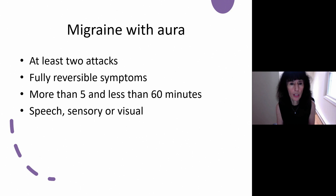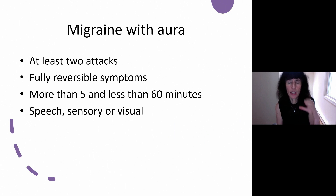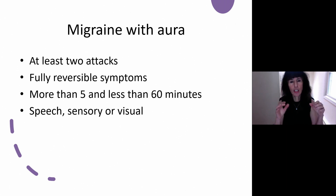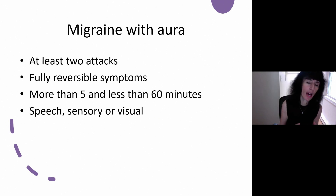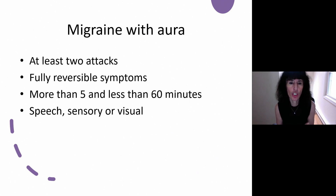Migraine with aura: you only need two attacks to make the diagnosis. The symptoms have to be fully reversible, lasting more than five minutes and fewer than 60 minutes. The most common kind is the visual aura — the scotoma, the hole in vision. It can scintillate, sparkle; a glowing zigzag that moves across vision is pretty common. A sensory aura is also common — numbness in your hand or face. You can have speech abnormalities that sound like an aphasia. You cannot make the diagnosis until it's recurrent — you cannot diagnose based on just one attack.